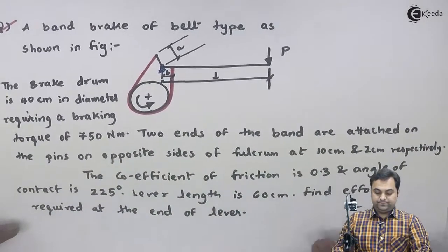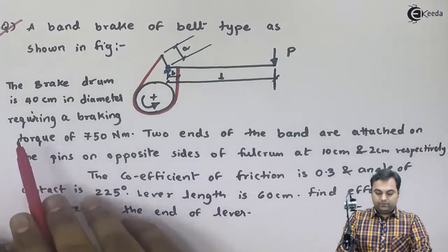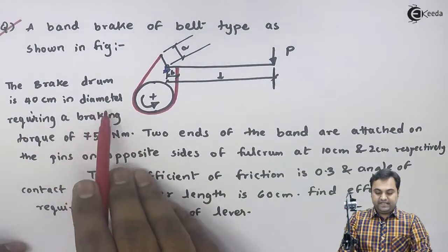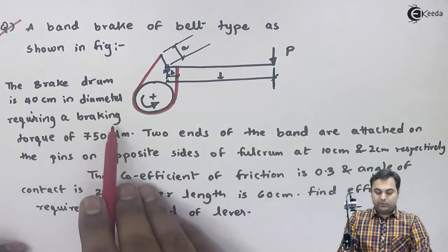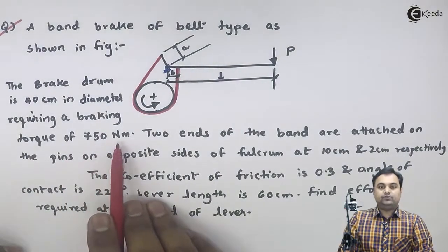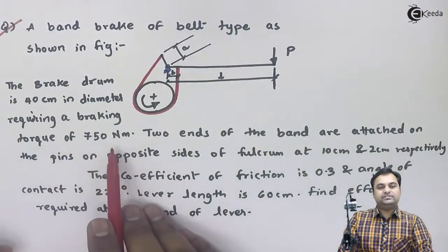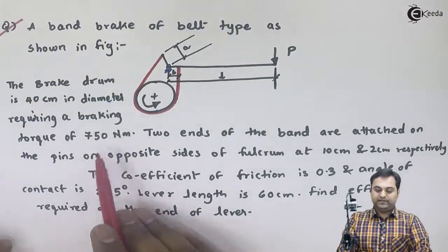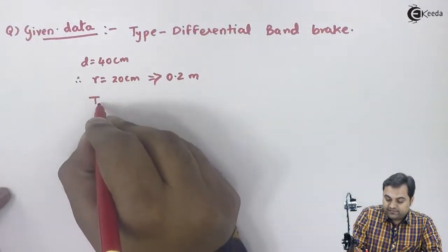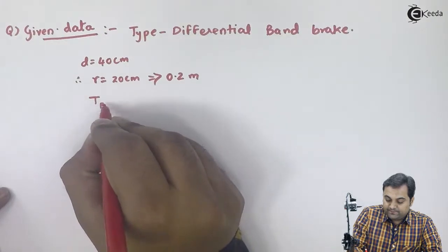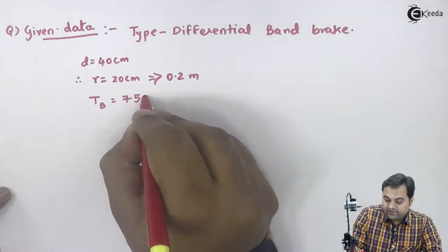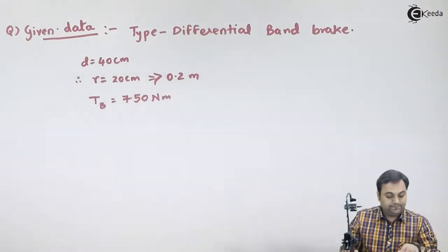The brake drum requires a braking torque of 750 Nm. The braking torque value is given to us, so I will write: T_B is equal to 750 Nm.